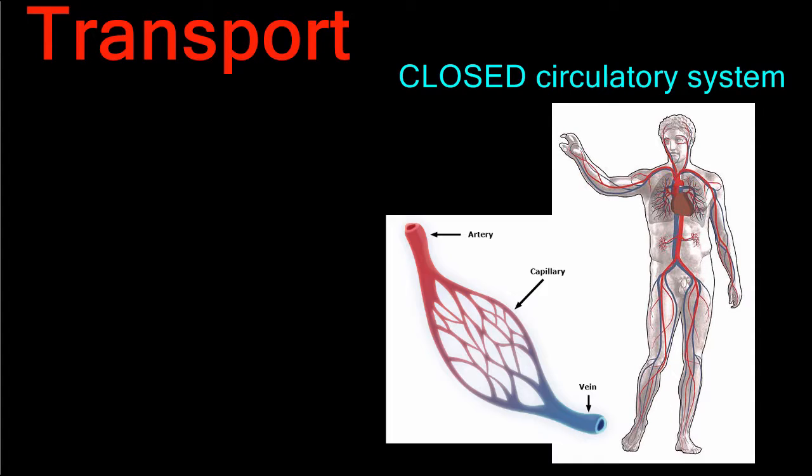The human circulatory system is a closed circulatory system. That is, one in which the blood remains enclosed within the vessels. The body uses this system to transport oxygen, nutrients, hormones, and waste products to their correct destinations.